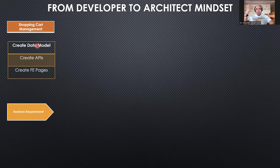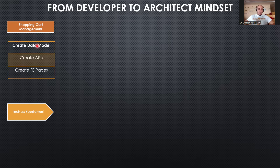Number one, the developer will think about creating the data models to achieve the shopping cart and make sure he has a completed data model. Accordingly, he will create the API layer using commonly used development tools like .NET or Java. These APIs will take responsibility for all the CRUD operations and management operations of the shopping cart. Then he will create the front-end pages or deliver these APIs to the mobile team to consume in order to manage the shopping cart.